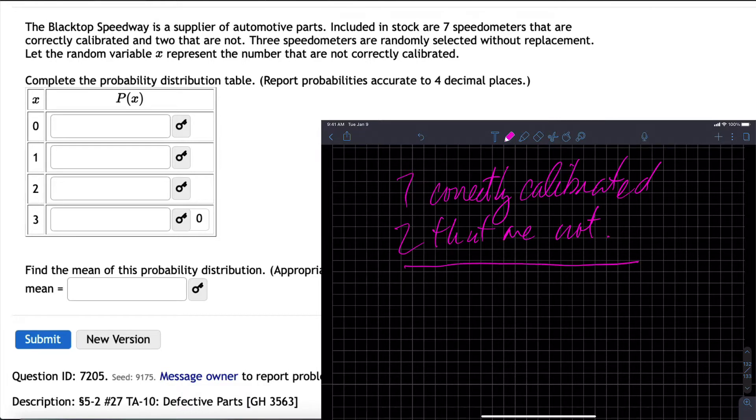If X represents the number that are not calibrated, if I'm looking to find the probability of drawing one out of those nine that's not calibrated, that would be the probability of X equals one.